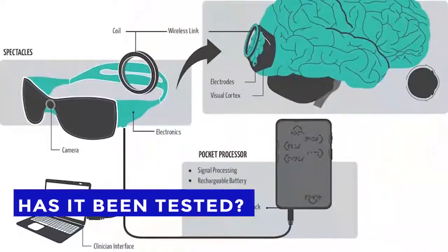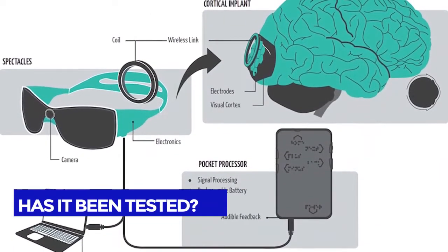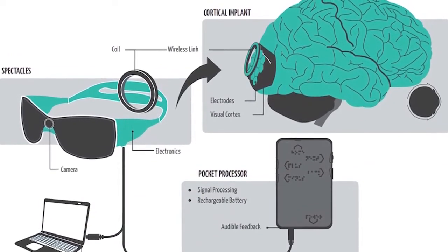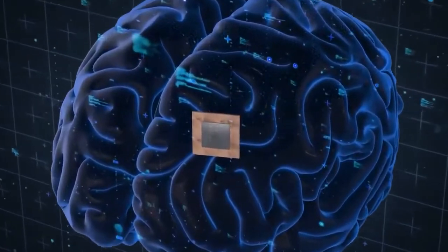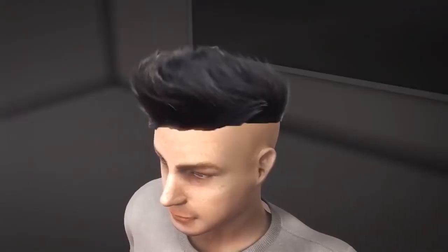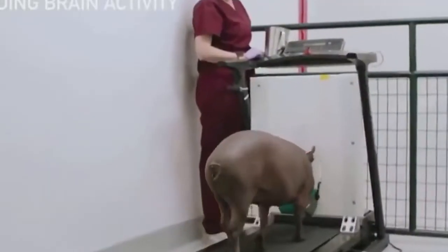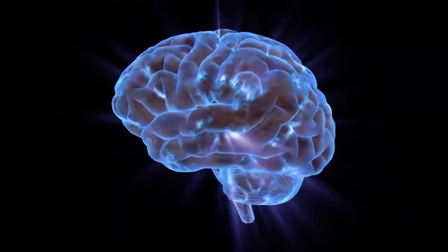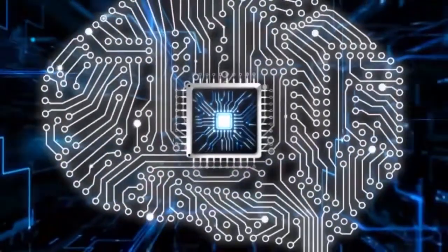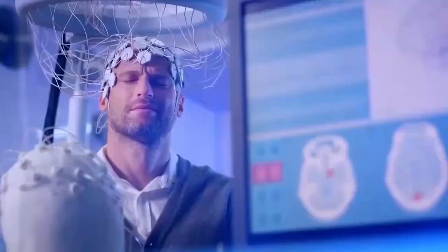Has it been tested? So far, the Neuralink brain implant has been tested a couple of times on animals. The first demonstration happened in 2018 when the technology was used to monitor the neural activity in a pig named Gertrude. Graham Moffat, a University of Toronto neuroscience research fellow, described the test as an order of magnitude leaps above what was obtainable at the time.